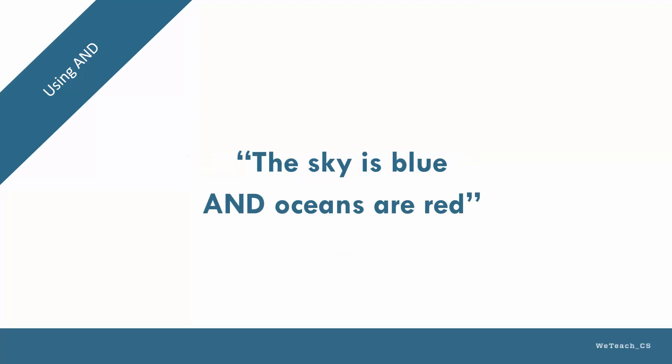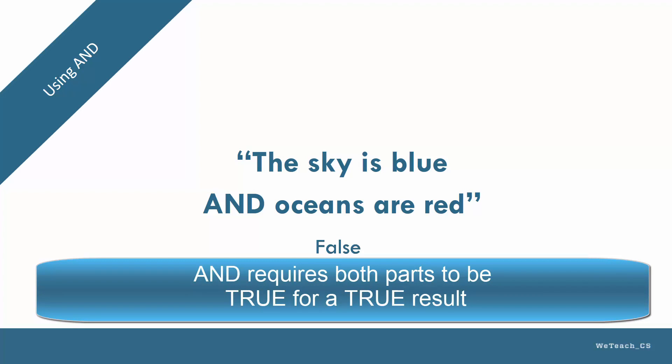Here is a combination of two propositions using the and conjunction operator. The truth value of the statement is based on the combined value of both propositions, which can be either true or false. In this case, since oceans are clearly not red, the entire proposition is false. The and operator requires both propositions to be true in order for the entire statement to be true.